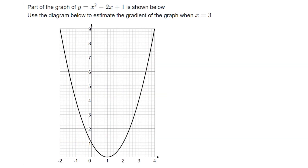Let's have a look at the first question. We're given the graph of y = x² − 2x + 1 and we're being asked to find the gradient of the graph when x = 3. We need to find that point on the graph where x = 3 - that is that point there.